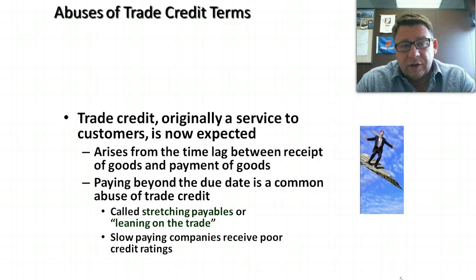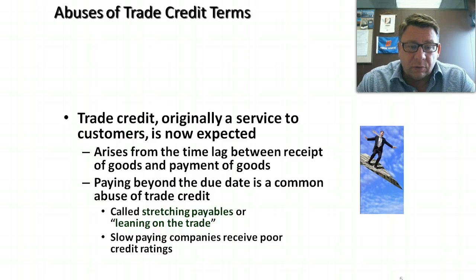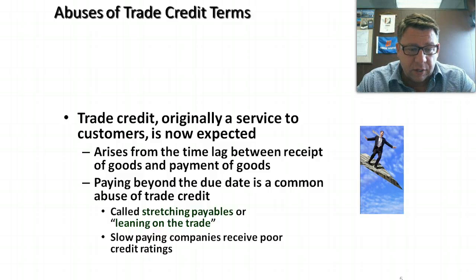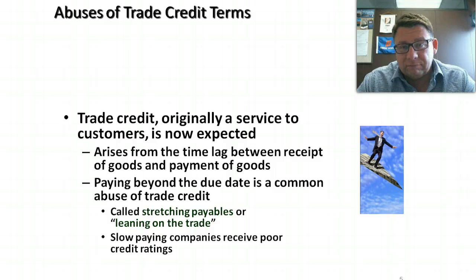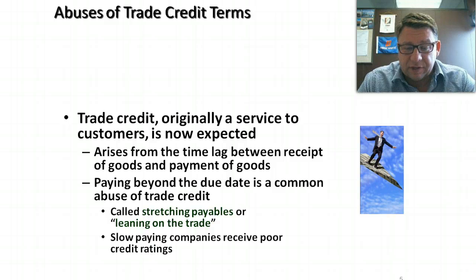Abuse of trade credit terms. Trade credit, which originally was a service to a customer — we'll bill you in 30 days — is now basically expected. It arises from the time lag between when the goods are received and when we pay for them. Payment beyond the due date is common. We sometimes call this stretching payables or delaying payment. If a company is slow at making its payments, they tend to receive poor credit ratings.